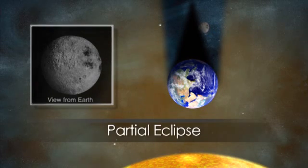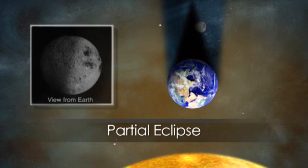A partial lunar eclipse happens when a portion of the moon enters Earth's umbra, while the rest of the moon remains in the faint light of the penumbra.